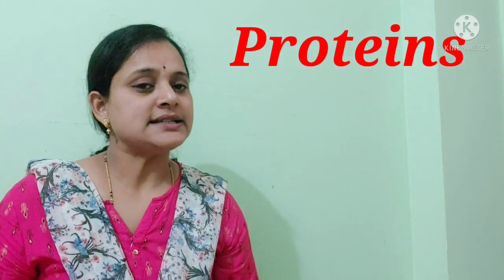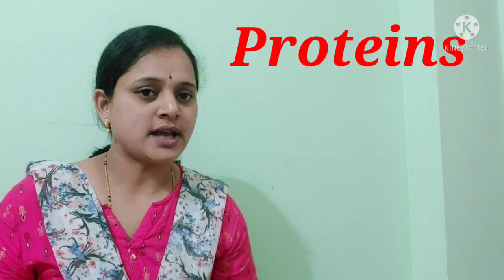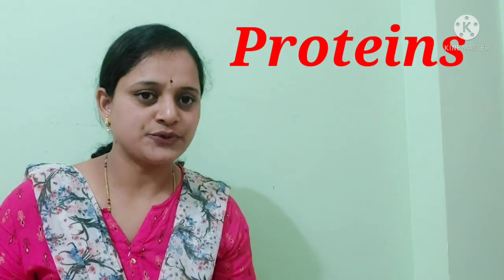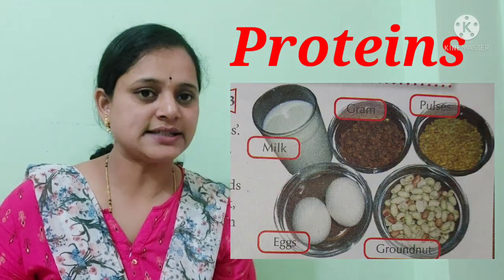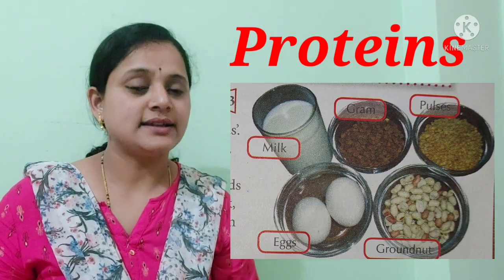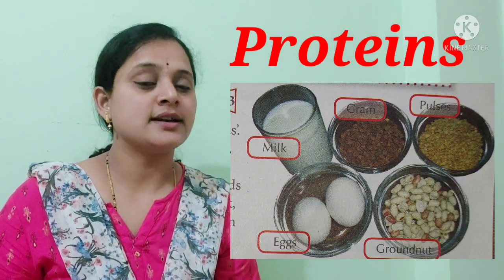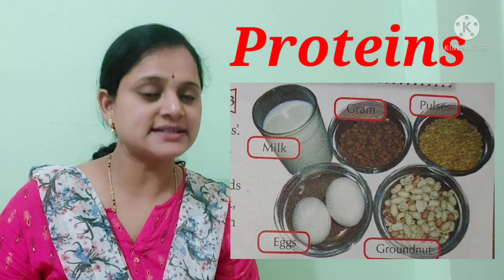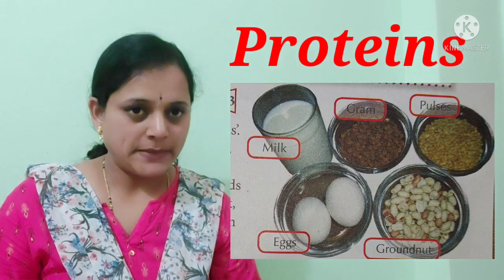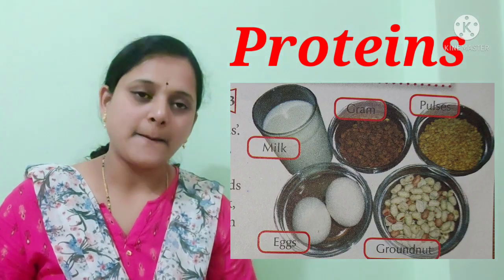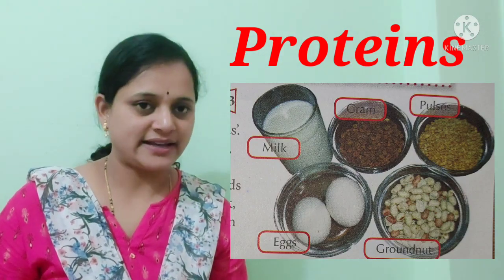Examples of protein-rich foods include milk, egg, groundnut, pulses, meat, soya bean, and peas.